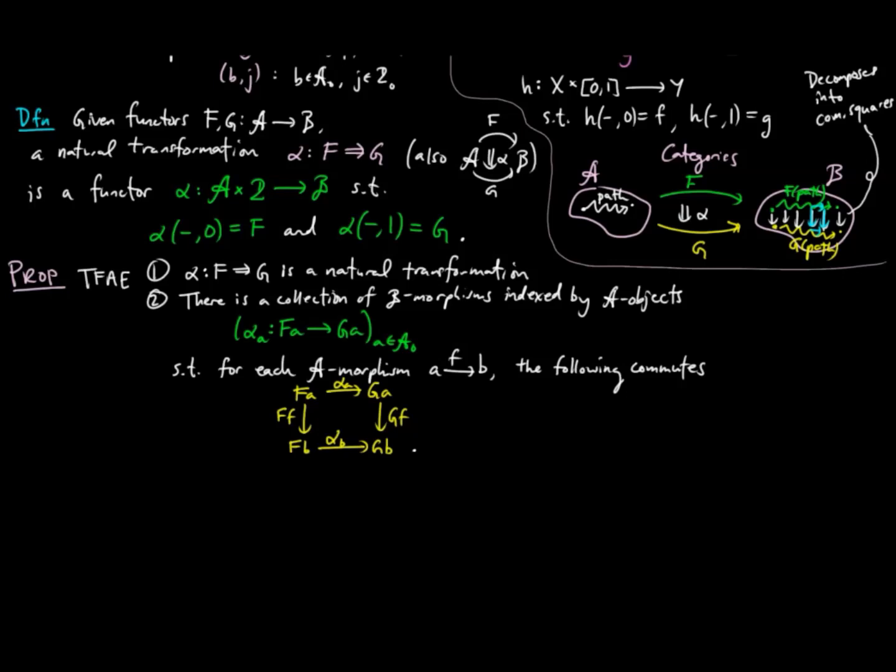For the proof that 1 implies 2, we assume that we are given a functor alpha from A cross 2 to B such that alpha on 0 is F and alpha on 1 is G as given in our definition. Then for each A object little a, define alpha sub A to be alpha evaluated on the identity on A, sigma, where remember sigma is the only non-identity morphism in the walking category.